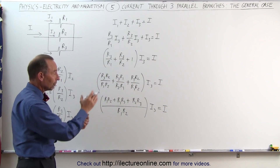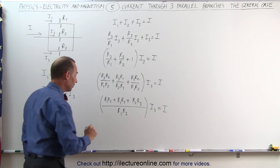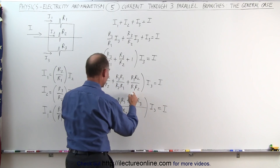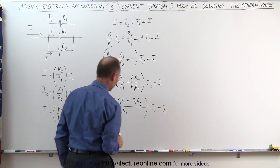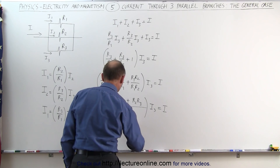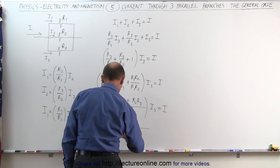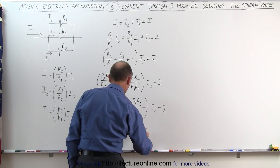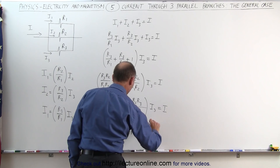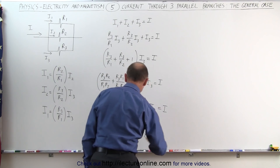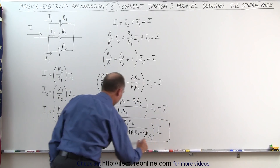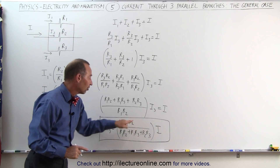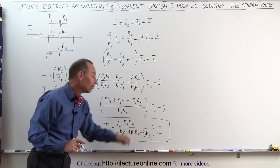Now I can write I3 in terms of I and all the resistors. Cross-multiplying gives us: I3 equals the ratio of R1 times R2 divided by R1 times R2 plus R1 times R3 plus R2 times R3, all multiplied times the current I. That's our first equation showing how to calculate the current through the third branch in terms of all three resistors and the total current.